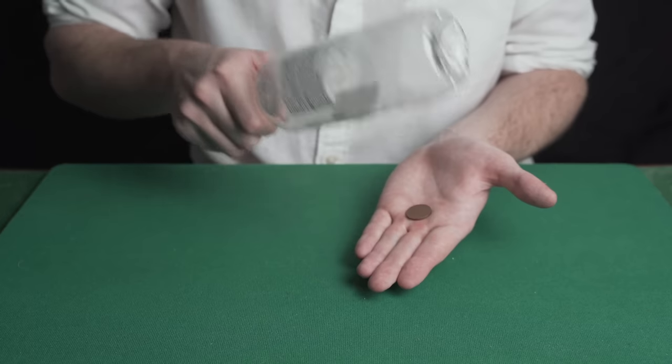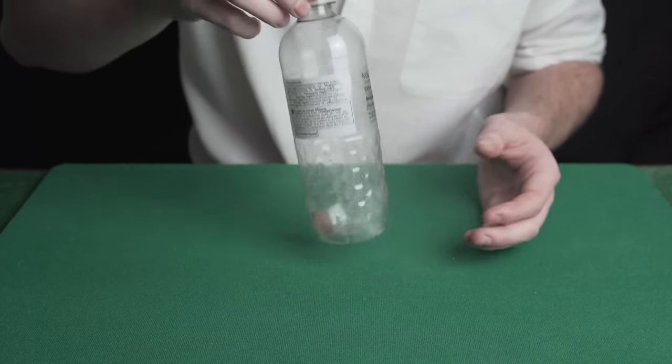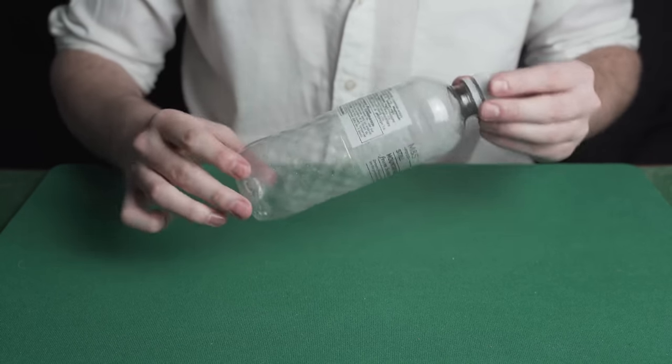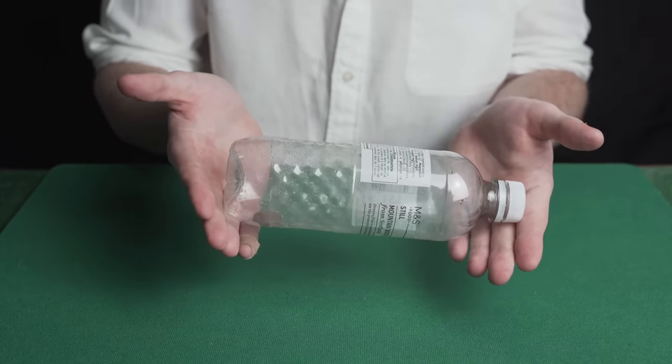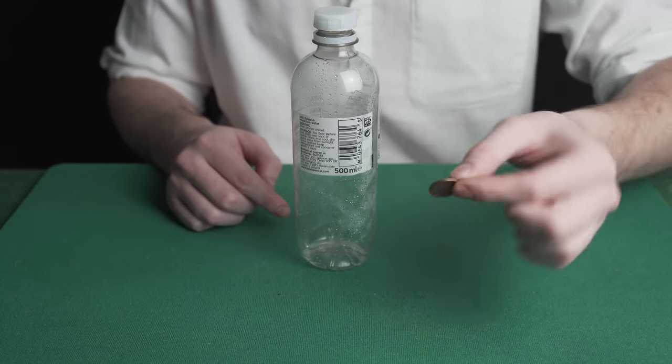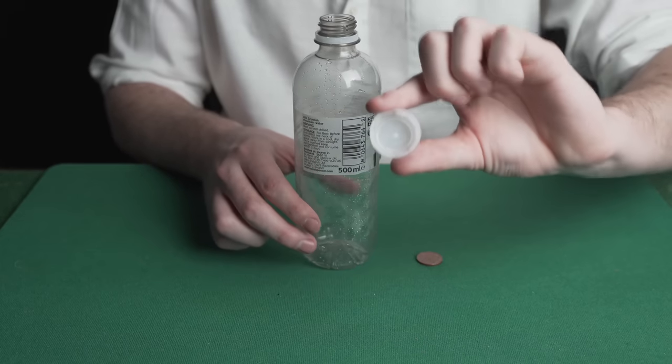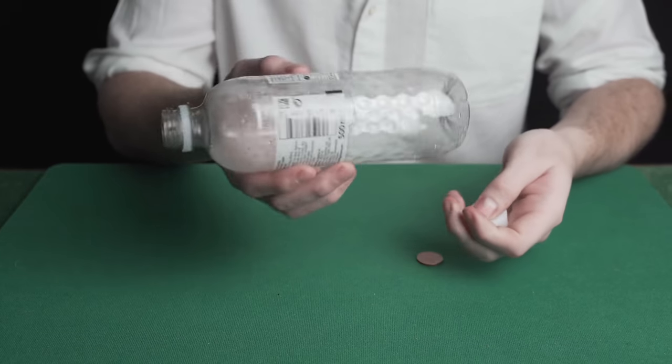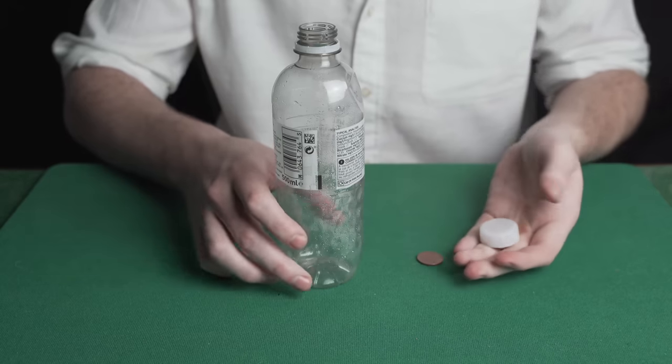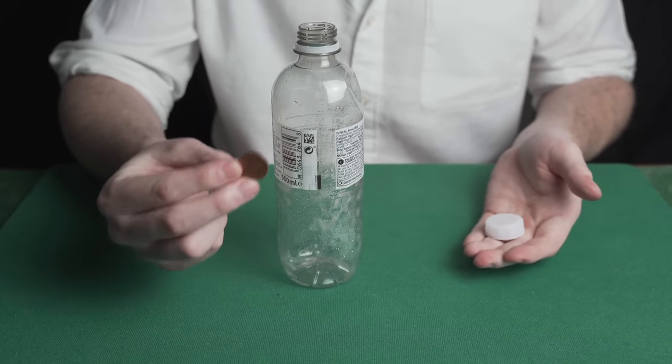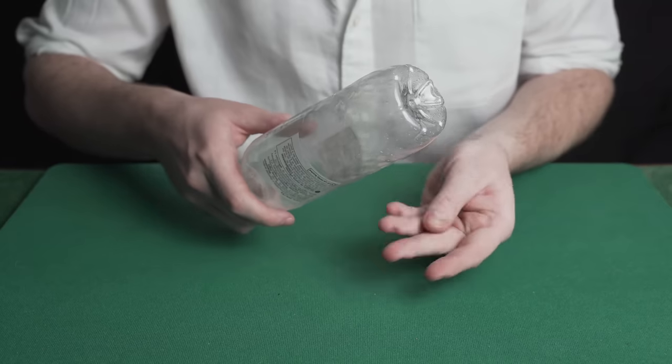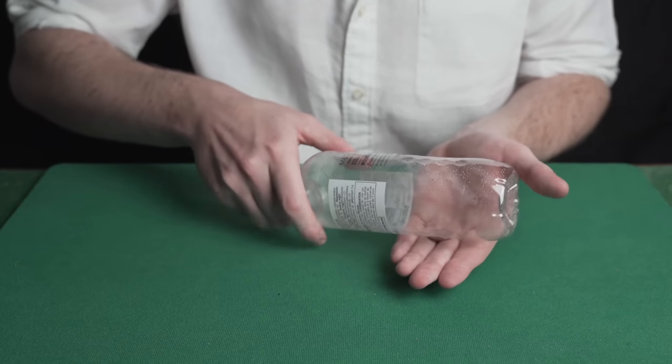This is the cleanest coin in bottle you'll ever see. The magician has a coin and a bottle. Both can be examined. He gives the spectator the bottle, the cap and the coin to examine. Everything is clean and fair. The magician explains that the coin will go inside the bottle. He screws on the lid and taps the bottle on the coin. The coin goes directly into the bottle.